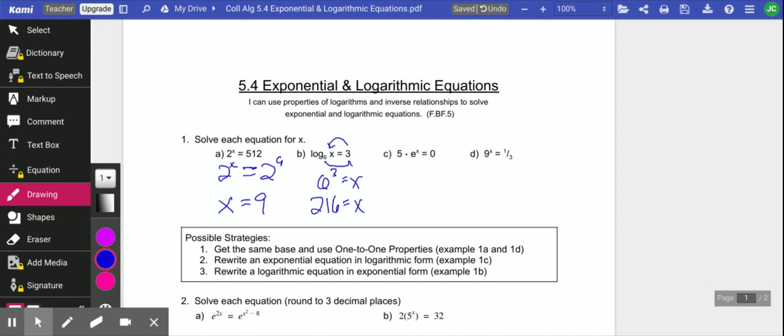On the next one, I'm going to add the e to the x to the other side. So I get 5 equals e to the x. And then I'm going to rewrite that in logarithmic form. So this is log base e of 5 equals x. Just rewriting that in logarithmic form, and we'll have x equals 1.609.